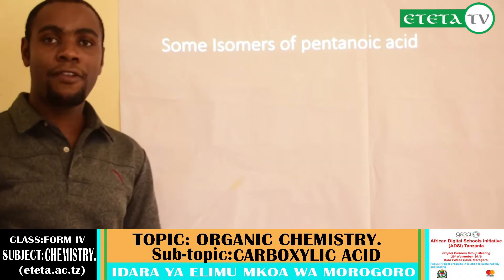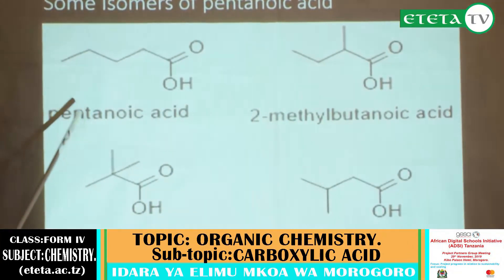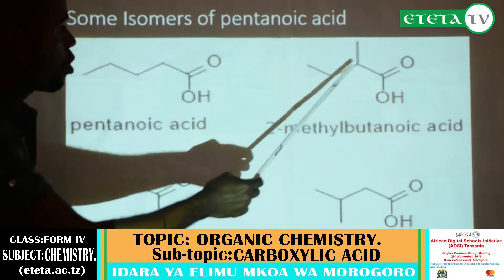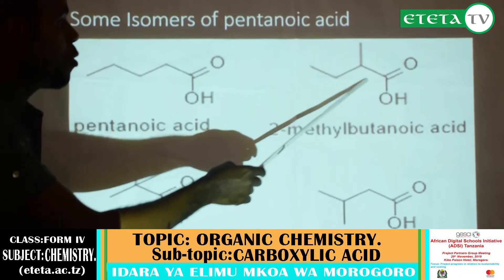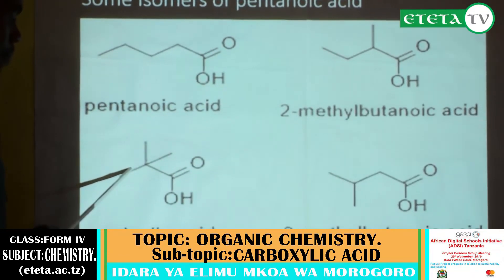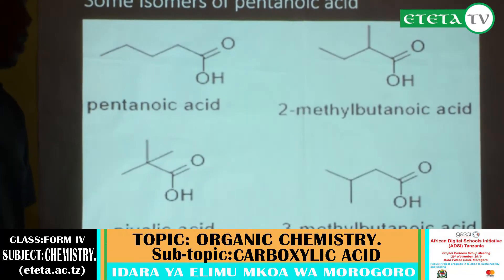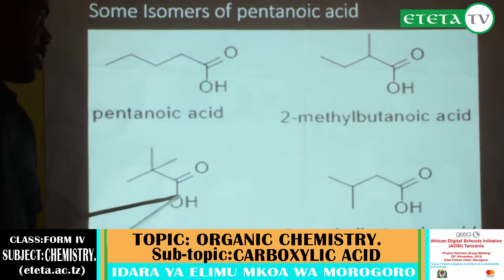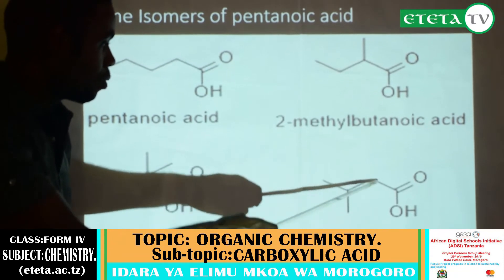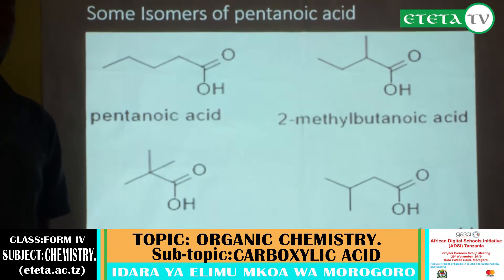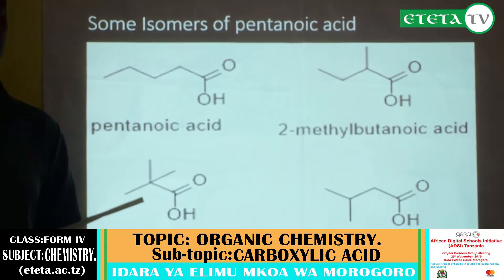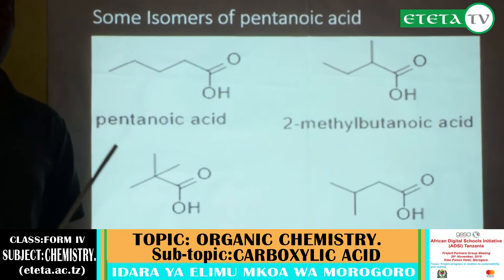Some isomers of pentanoic acid: the first is pentanoic acid itself — 1, 2, 3, 4, 5 carbons. The second is 2-methylbutanoic acid. The third is 2,2-dimethylpropanoic acid, whose common name is pivalic acid. The fourth is 3-methylbutanoic acid. These four are some isomers of pentanoic acid; there are many more possible isomers of pentanoic acid.